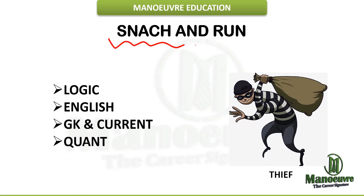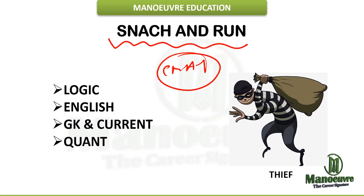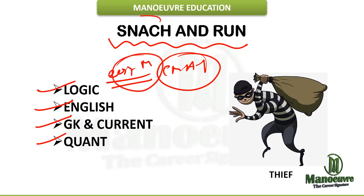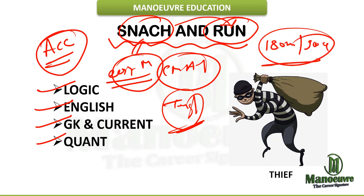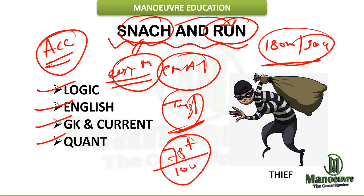My strategy is to snatch and run to solve the CMAT paper. Whatever question I know — whether it is logic, English, general awareness, or quant — I solve easy to moderate questions first. I snatch all the easy questions and bust through the paper, then come back to solve the tough questions that take more time. CMAT requires more accuracy. You have 180 minutes, which is quite sufficient. Use the saved time in sections like quant and logical reasoning. Your minimum target should be 75 plus correct out of 100 questions, which equals 300 plus marks.